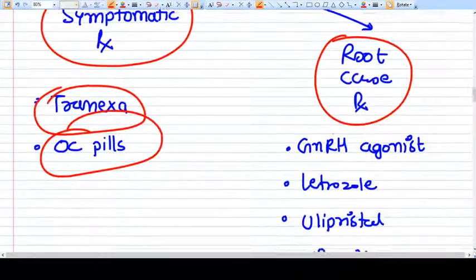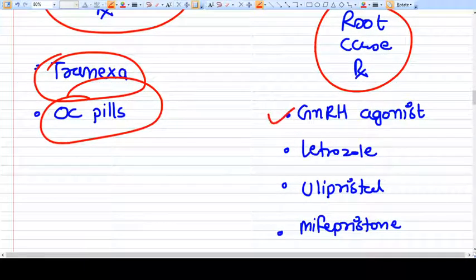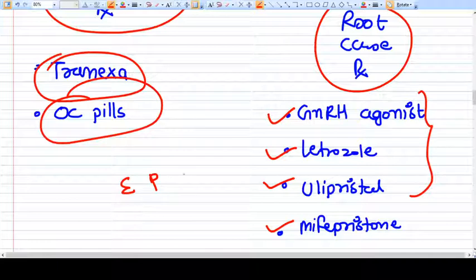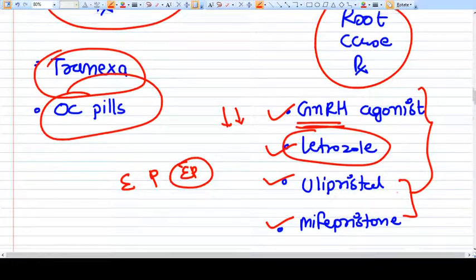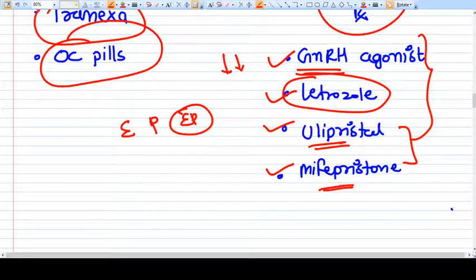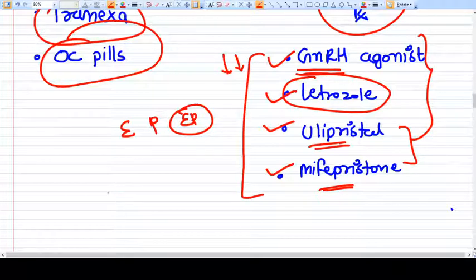But the root cause of treatment, that means you want to treat the myoma exactly, then you have variety of drugs that are GnRH agonist, letrozole, ulipristal, mifepristone. If you see this drug you will find some common things. These all these things either they decrease estrogen, either they decrease progesterone, or either they decrease both estrogen and progesterone. GnRH agonists do what? They induce a menopause like state so estrogen will be down, progesterone will be down. Letrozole is an aromatase inhibitor, it will also decrease the estrogen effectiveness. Ulipristal and mifepristone are progesterone antagonist, they will antagonize the progesterone.